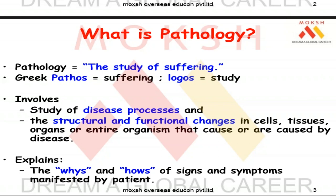Most of medicine has been written in Greek and Latin, originating from Alexander the Great, who captured nearly 70 percent of the world. Greece was the originator of medicine including pathology, so all medical terminology comes from Greek and Latin. If you remember the root words, you will understand pathology. Breaking down the word: in Greek, pathos means suffering and logos means study — so pathology literally means the study of suffering.